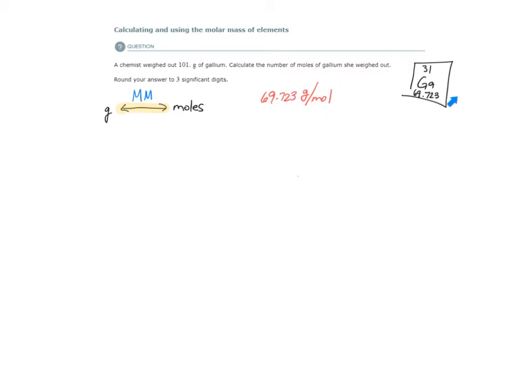but the units, instead of AMUs, is grams per mole. So there are this many grams of gallium in one mole of gallium.